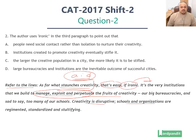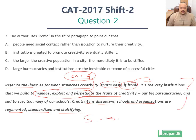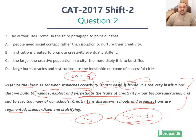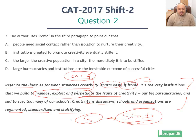Creativity is disruptive. Schools and organizations are regimented, standardized and stultifying — which is ineffectively crippling. So the things which were meant to support creativity are the very things stopping it — that's the irony in this. Irony refers to a sentiment where there is a difference between the expected outcome and what actually happens. They are generally of an opposite nature, and that feeling is called irony. Which option highlights this?